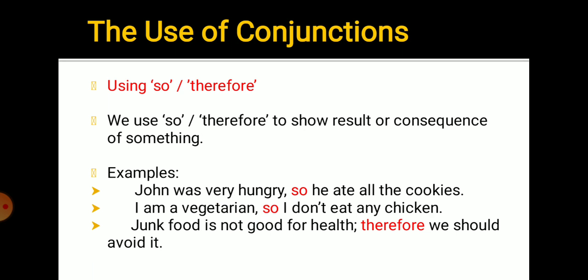So and therefore. We use so or therefore to show result or consequences of something. Consequence means result. John was very hungry, so he ate all the cookies. I am a vegetarian, so I don't eat any chicken. Junk food is not good for health, therefore we should avoid it. Otherwise also showed consequence or result, but mostly negative or opposite. In so and therefore, it's nothing like positive or negative.